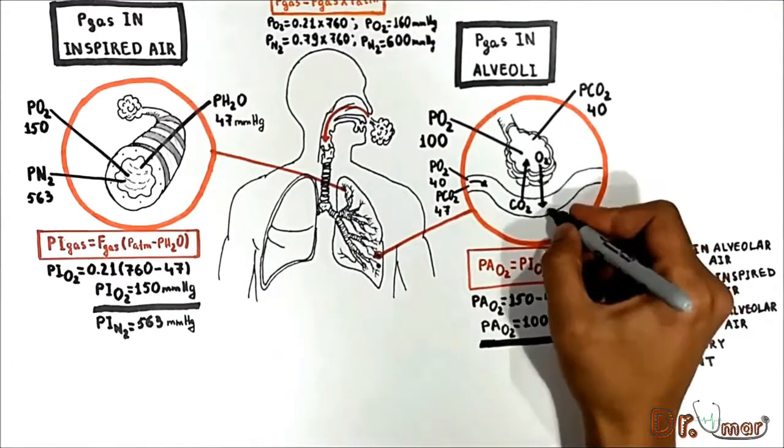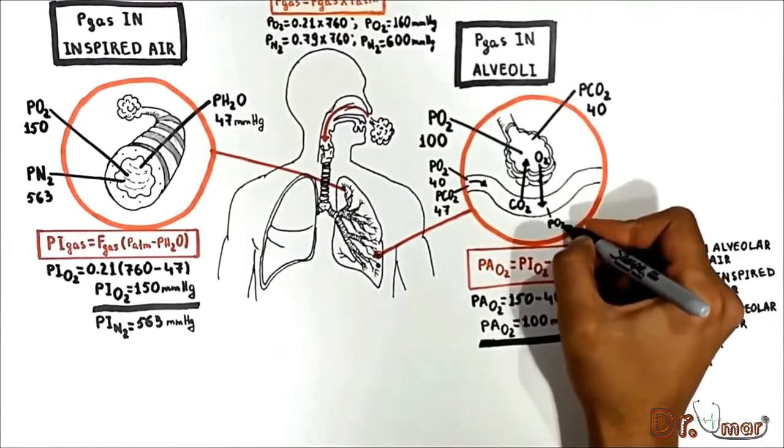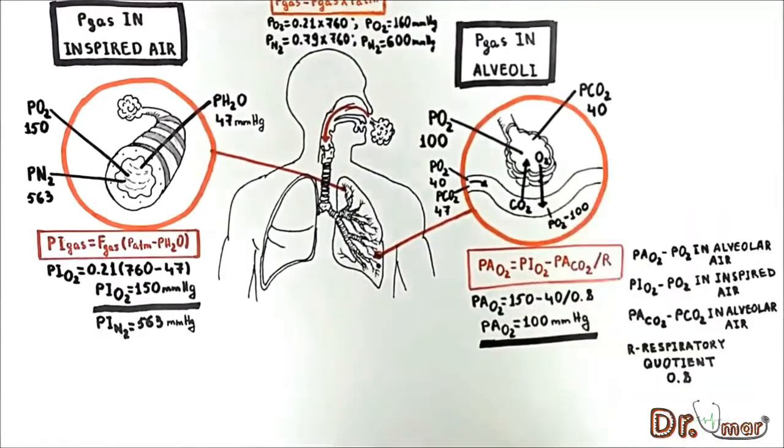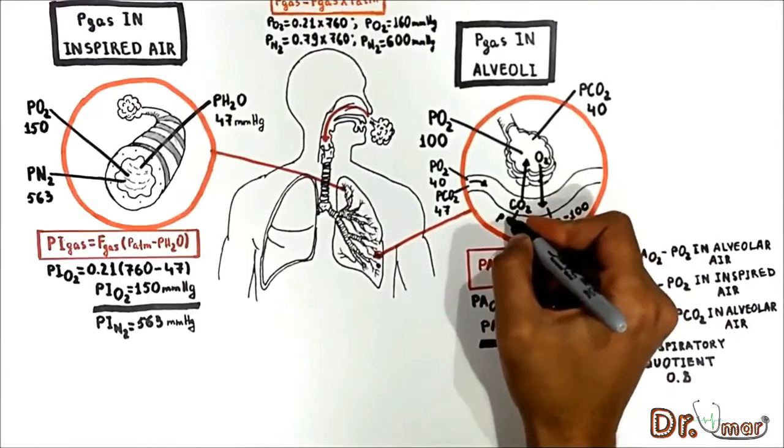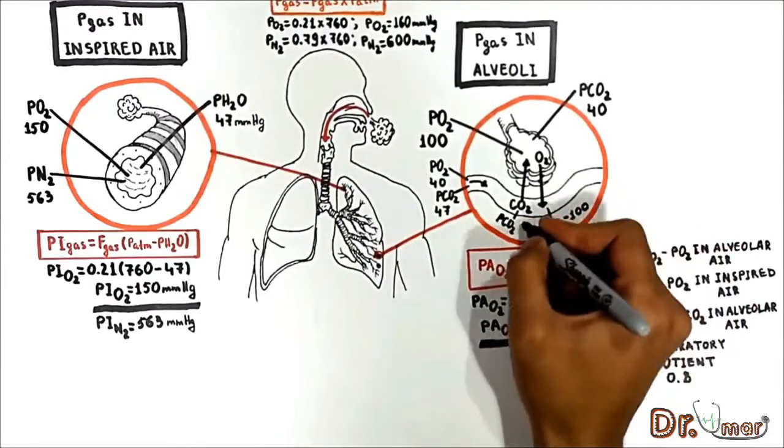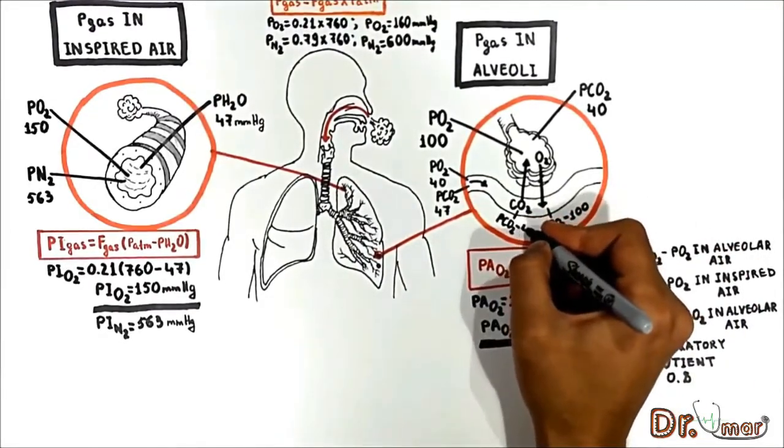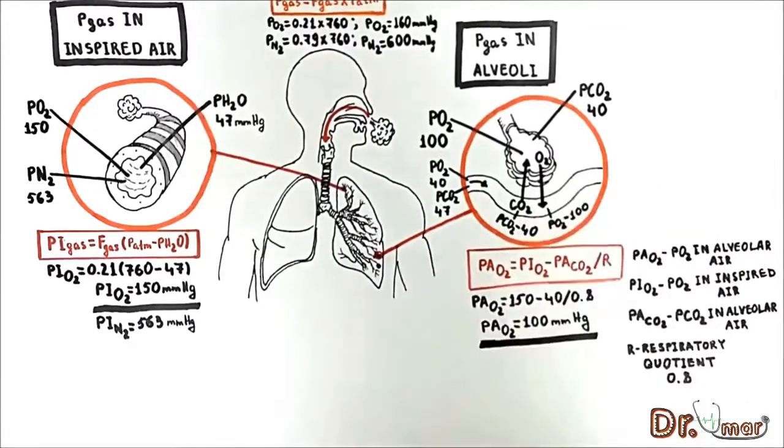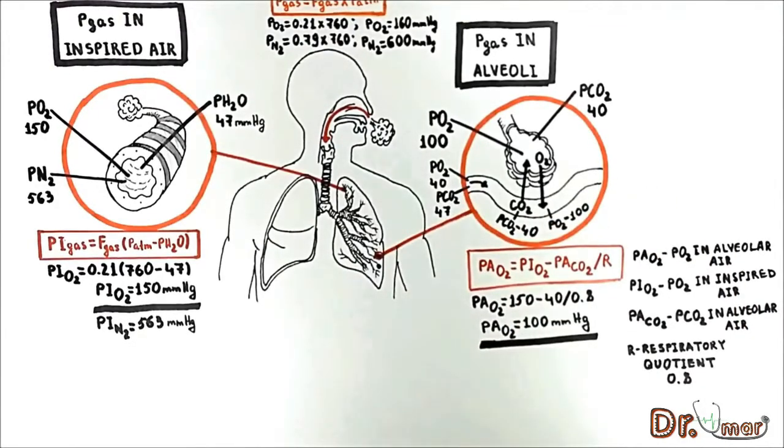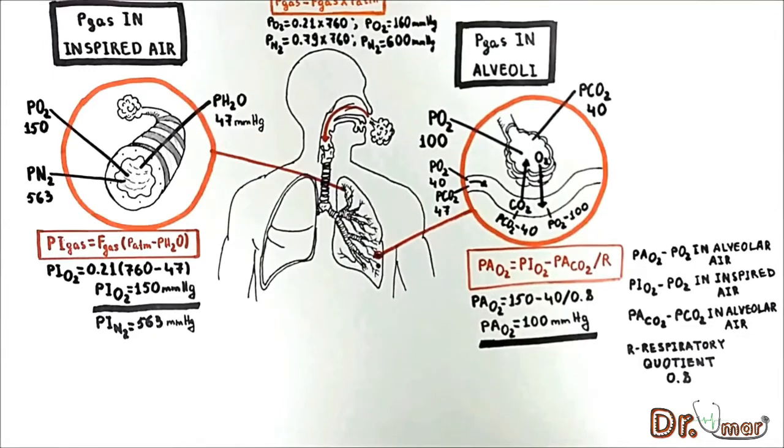The partial pressure of blood oxygen and alveolar oxygen becomes 100 mmHg, and PCO2 in alveolar compartment and pulmonary blood will become 40 mmHg. The end capillary has the same gas composition as alveolar air.